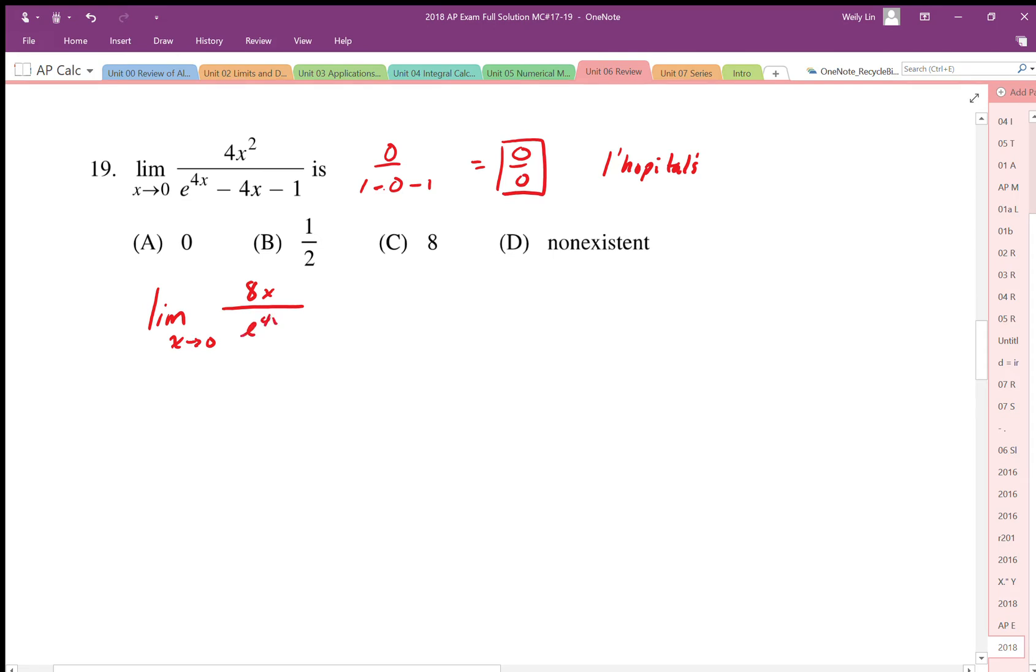When we evaluate this we end up with zero, and then we end up with e to the power of zero which is one, so we end up with four minus four. Again we end up with zero over zero, so we haven't been able to evaluate it but we have the condition to apply L'Hôpital's again.